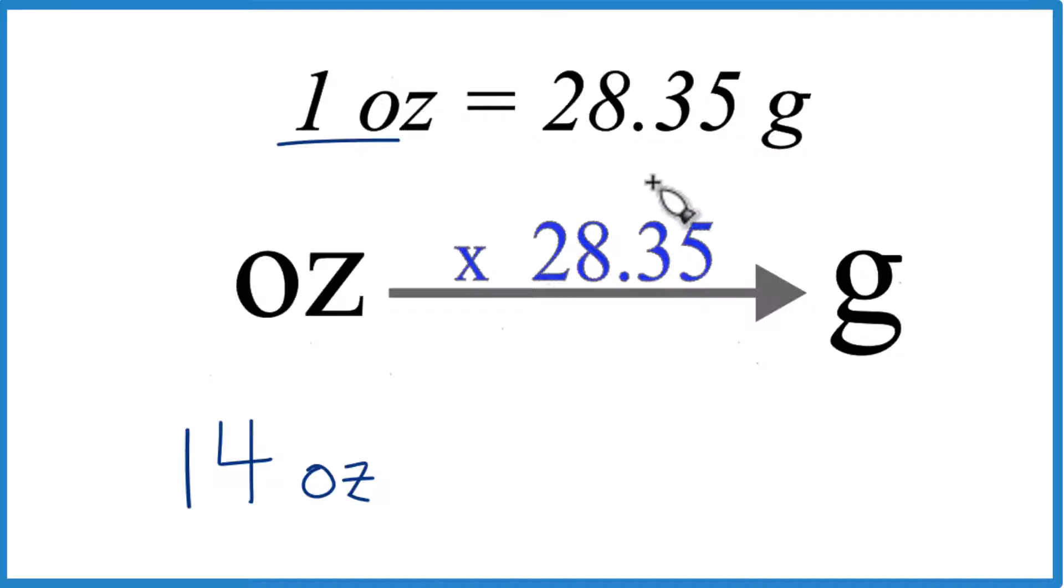We call this a conversion factor, and we need it when we're going from ounces to grams. So we have 14 ounces, and we're going to grams. We multiply by 28.35.